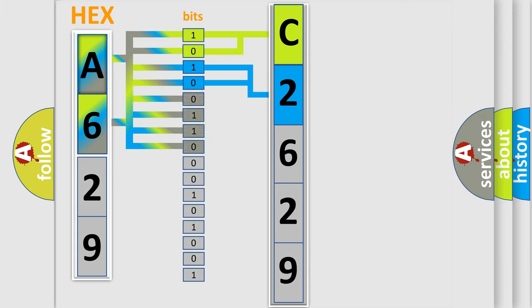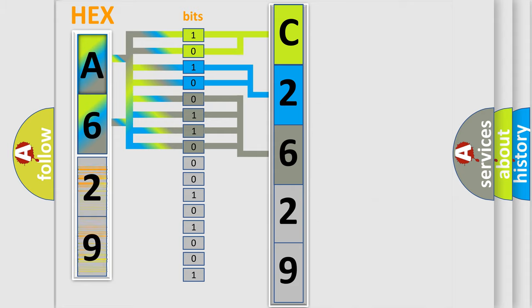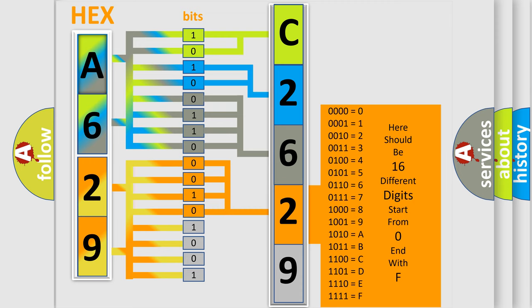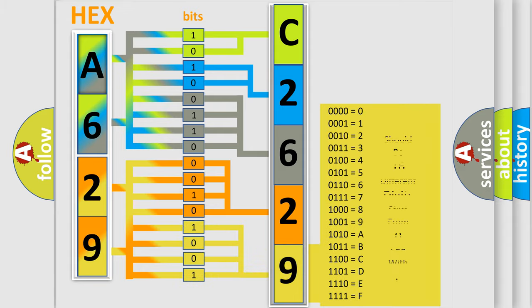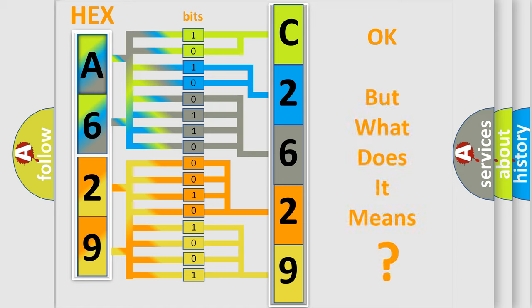The next two bits again determine the second character. The last bit styles of the first byte define the third character of the code. The second byte is composed of a combination of eight bits. The first four bits determine the fourth character of the code, and the combination of the last four bits defines the fifth character. A single byte conceals 256 possible combinations. We now know in what way the diagnostic tool translates the received information into a more comprehensible format.